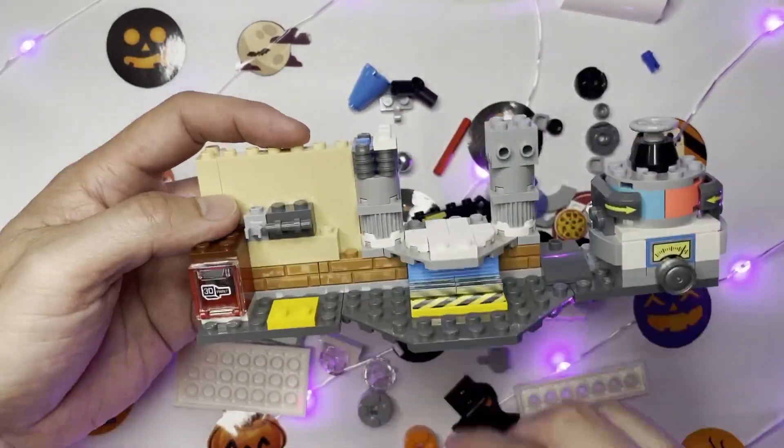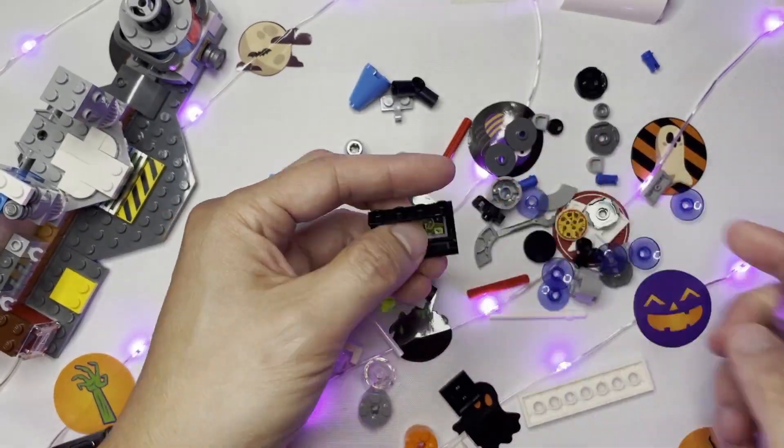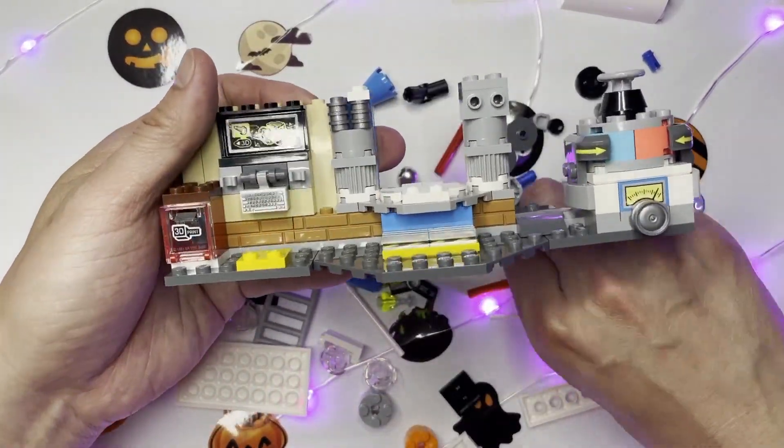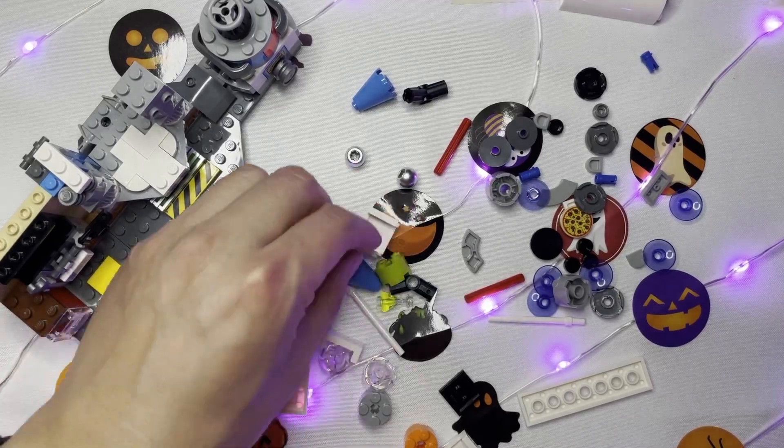As I said before, this set is small featuring only 174 pieces. When you open the box, you get two bags of LEGO pieces and you immediately begin with building the crazy scientist and start building the base of the laboratory.